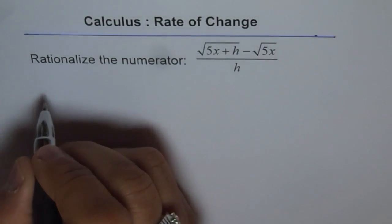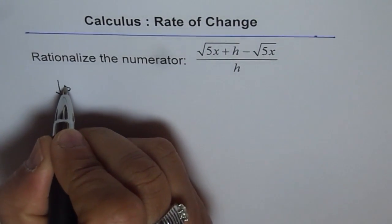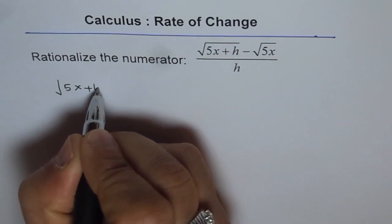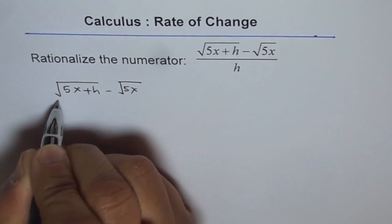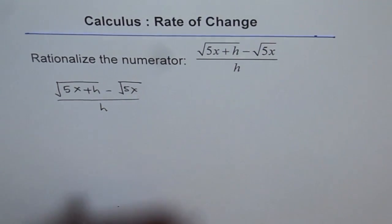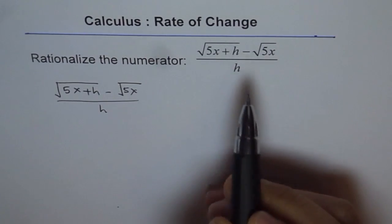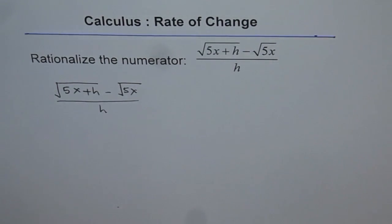Let's rationalize. So we are given square root of 5x plus h minus square root of 5x divided by h. To rationalize the numerator, wherever we have square root, that part has to be rationalized.